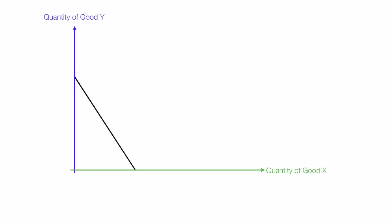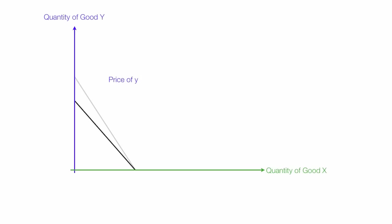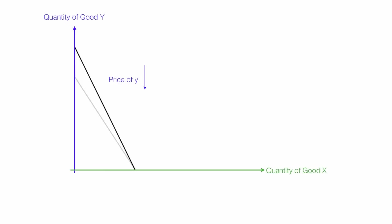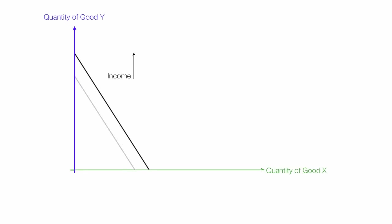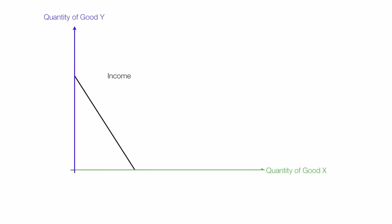I'll do the same for the price of Y — if the price of Y goes up, what happens to the quantity of good Y consumed, and what happens to the quantity of good Y consumed if the price of Y goes down. I'm also going to show you what happens when the consumer income increases — the budget line shifts out — and what happens when the consumer's income decreases and how the budget line shifts in.